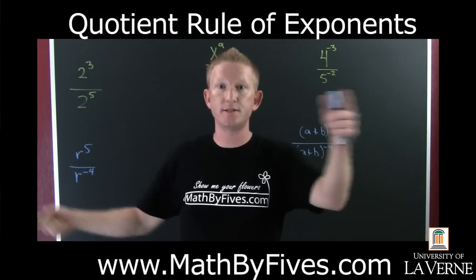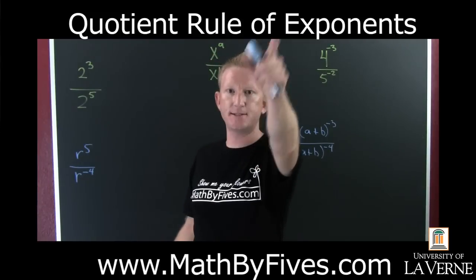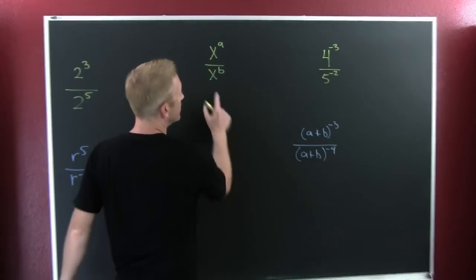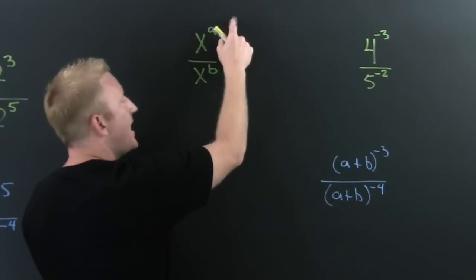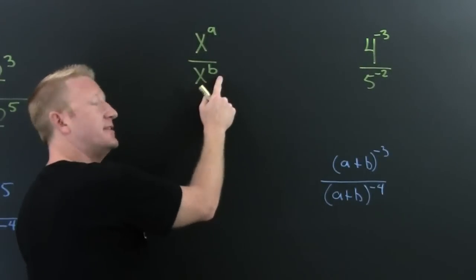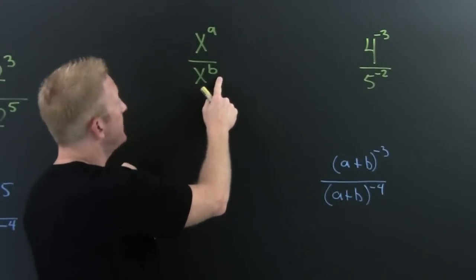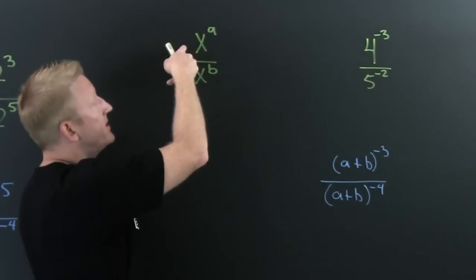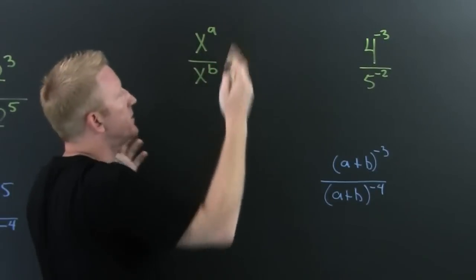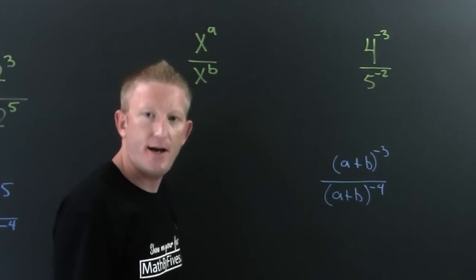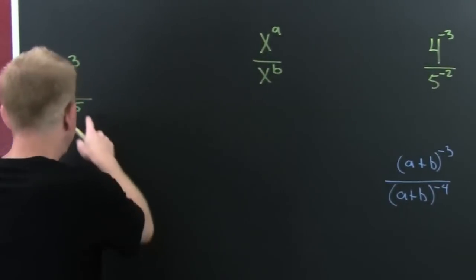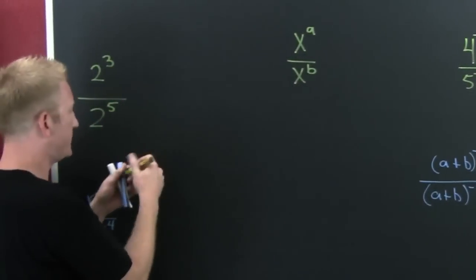Quotient rule of exponents. The question is, what's x to the a divided by x to the b? Here we see that we have the same base and we're dividing. So what do we do to their exponents? Let's explore that in this small example.